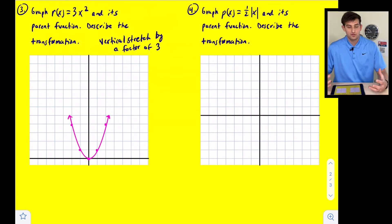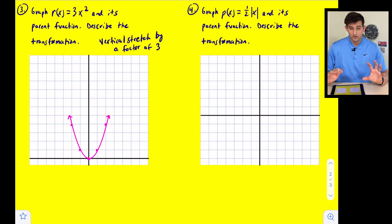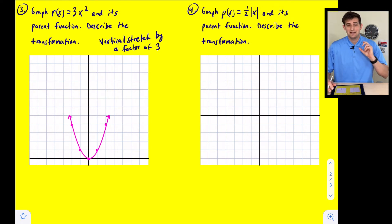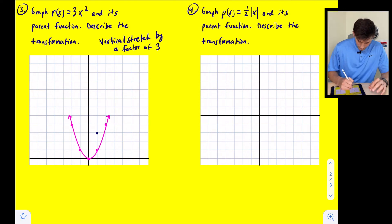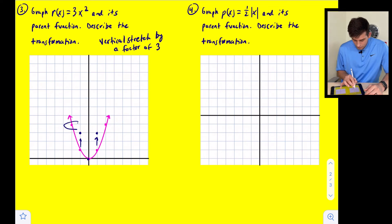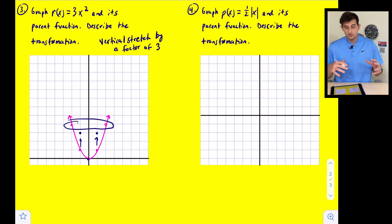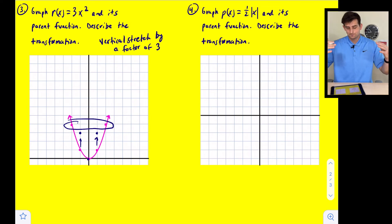For a vertical stretch, we are multiplying our output values — our y-values. Our vertex stays in the same place because it's at the origin with a y-coordinate of zero, and zero times three is still zero. The two points with a y-value of one will have a new y-value of one times three, so they move up to three. The two outer points with x-values of negative two and two have y-values of four from the parent function. Multiplying four by three gives a new y-value of twelve.